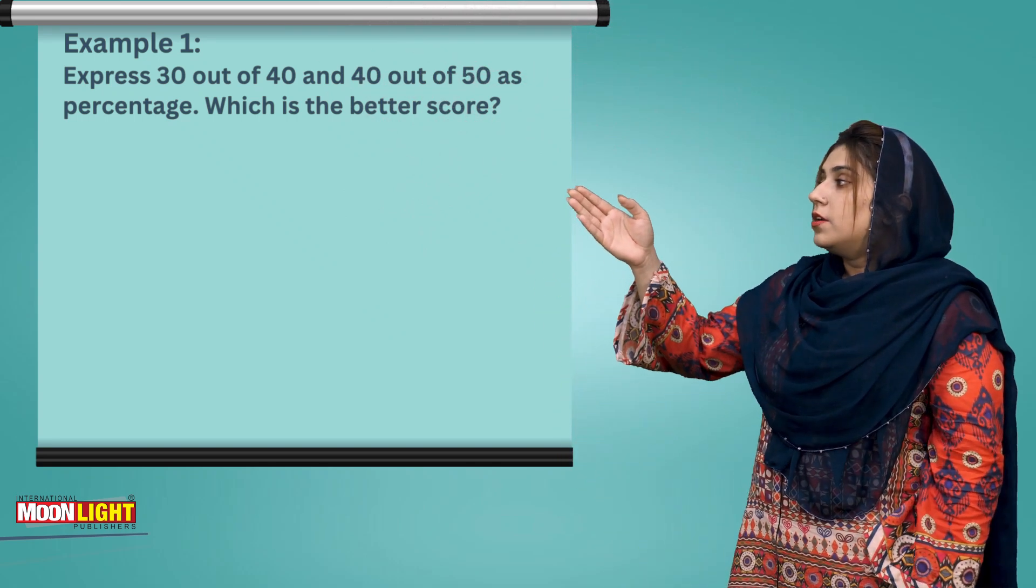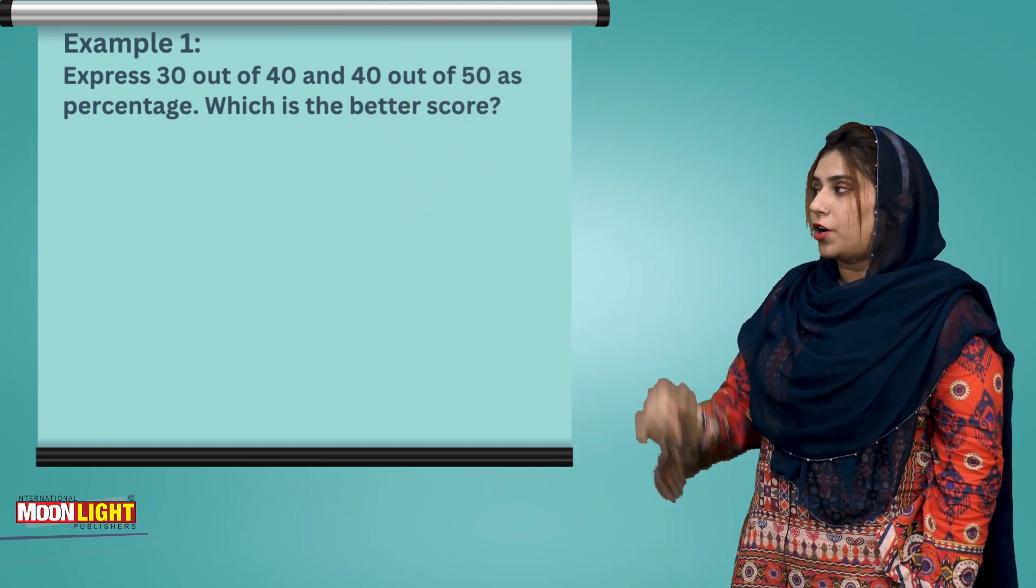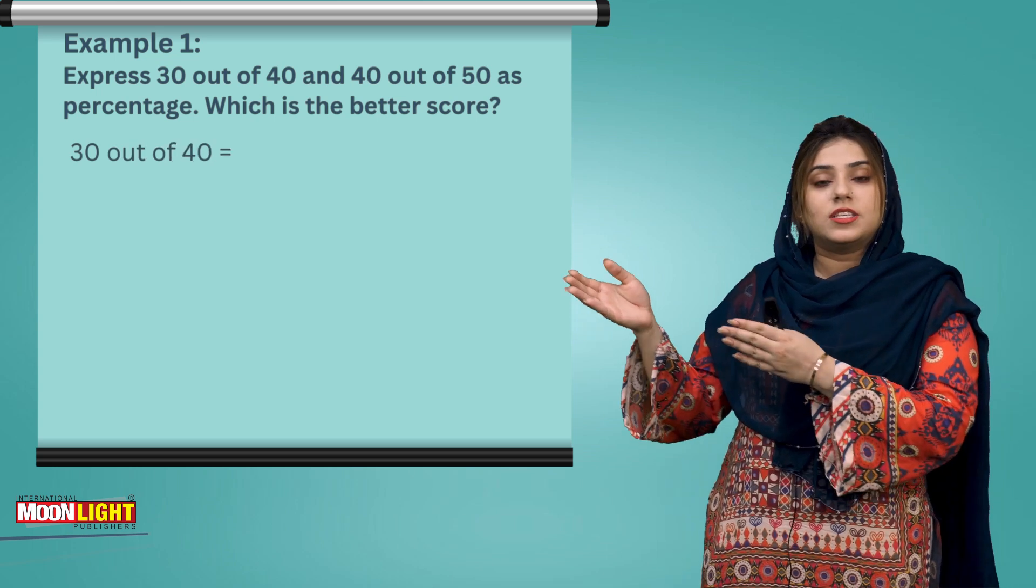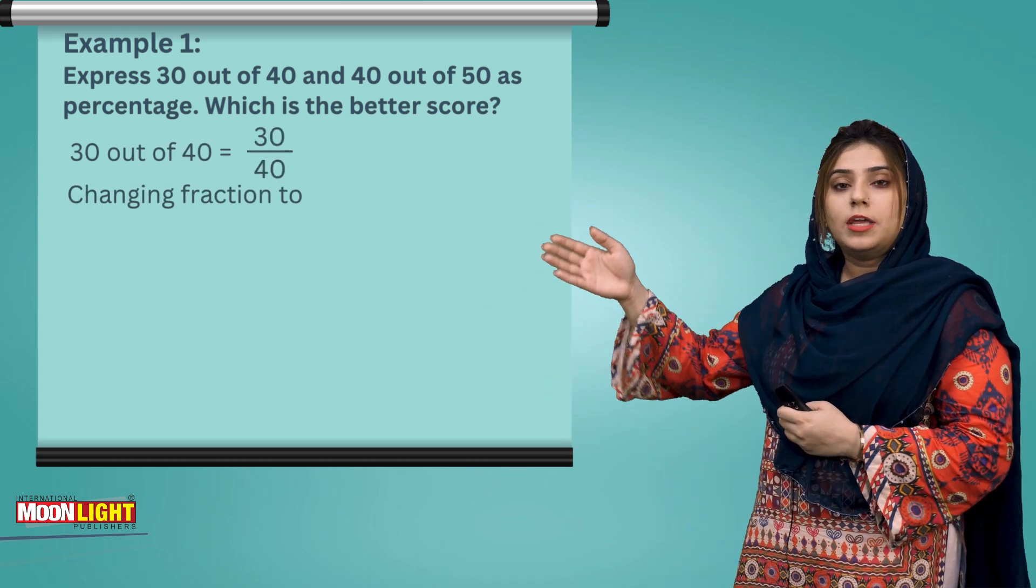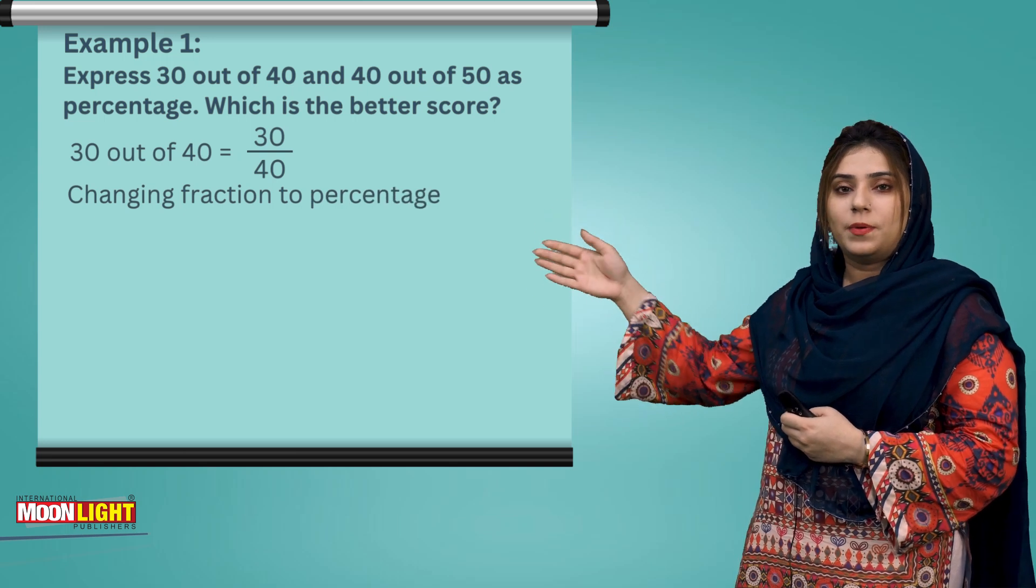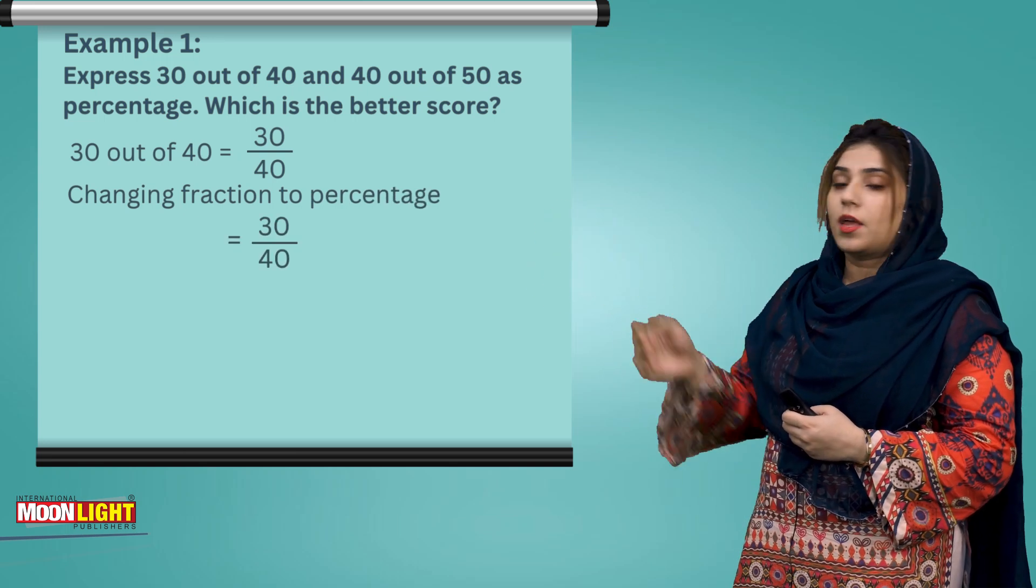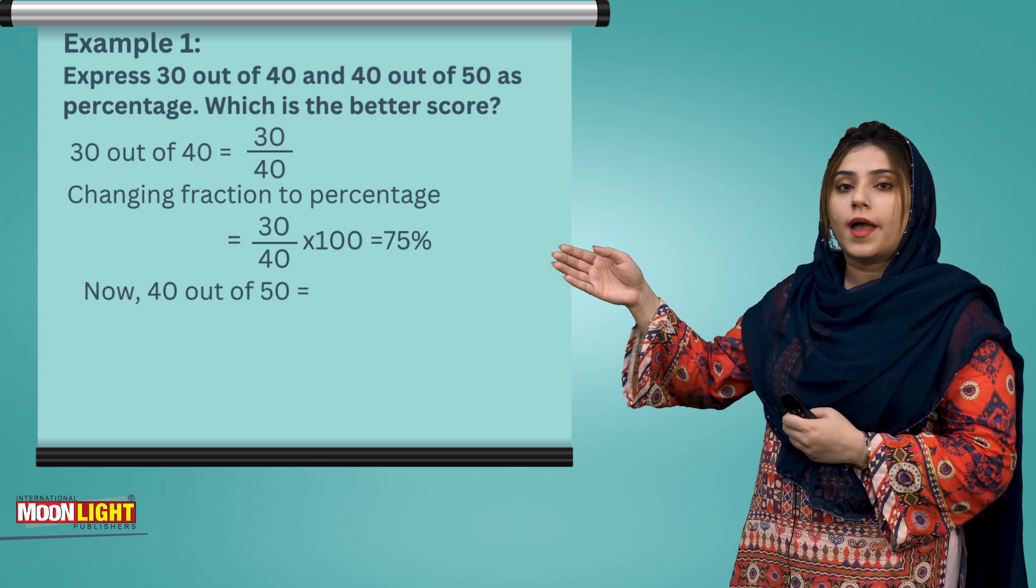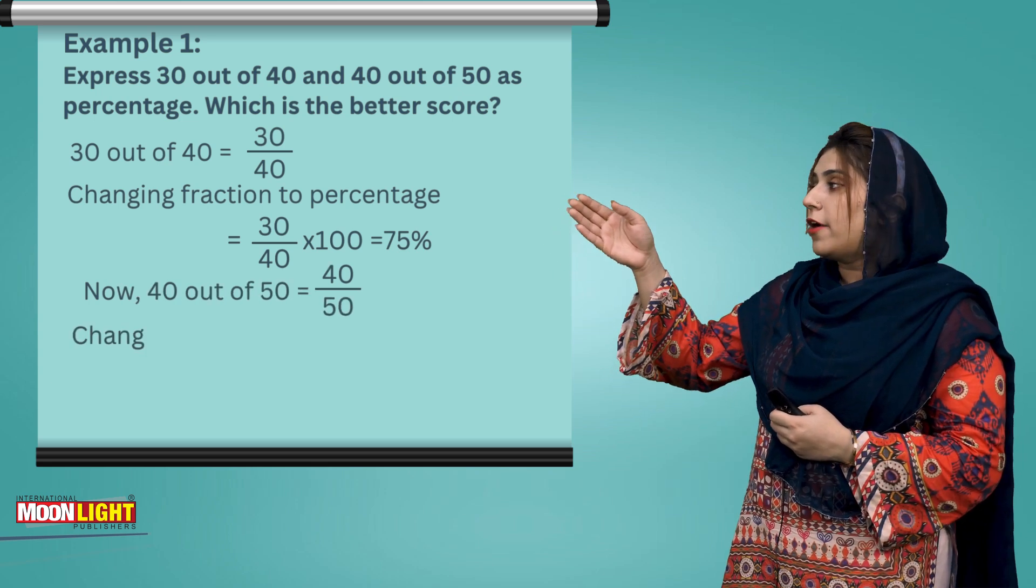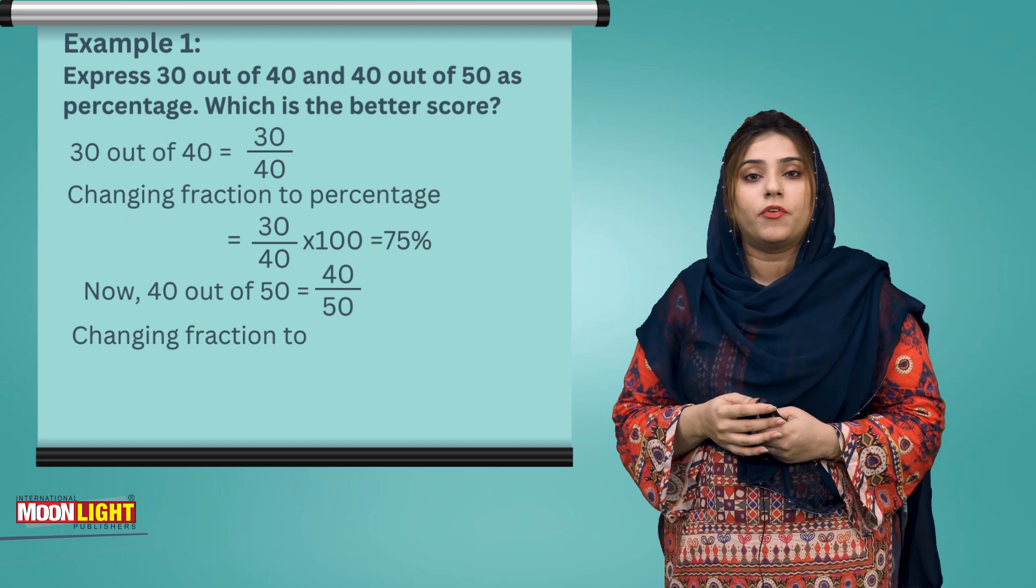First, we look at 30 out of 40. Changing fraction to percentage: 30/40 times 100 equals 75%. Now, 40 out of 50.